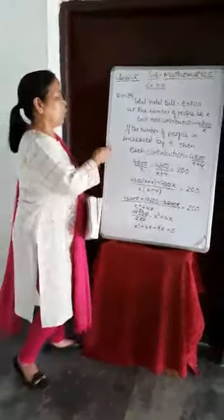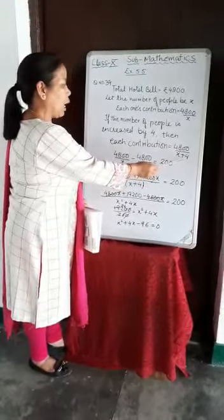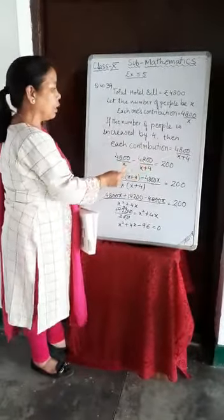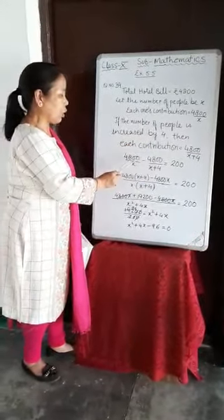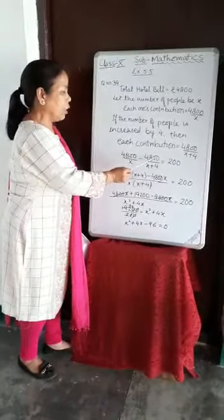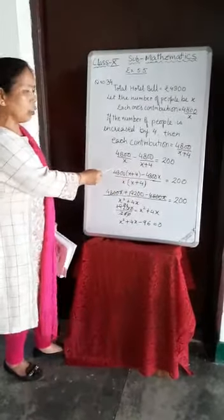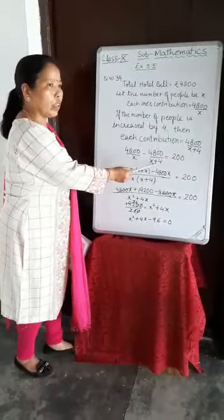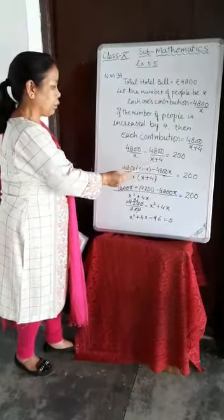If the number of people is increased by 4, then each contribution will be Rs. 4800 upon X plus 4. According to the question, if the number of people increased, the contribution decreases. It means 4800 upon X minus 4800 upon X plus 4 equals 200. As you know, if the denominators of two fractions are not the same, their product is the LCM. So X multiplied by X plus 4 is the LCM.